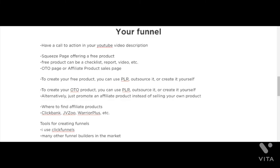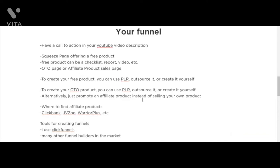The other component of this blueprint is to have a funnel in place. A funnel is a process you take your customers or leads through to collect their contact information and sell them products at each step. In your YouTube video descriptions, you're going to want to have a call to action. For example, if a video is about Bitcoin or how to buy cryptocurrency for beginners, you could create a relevant free gift offer.